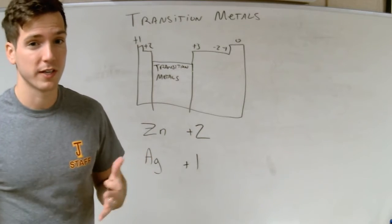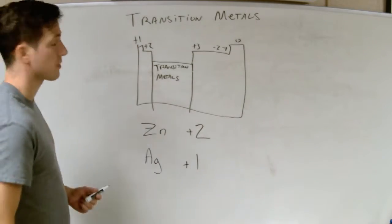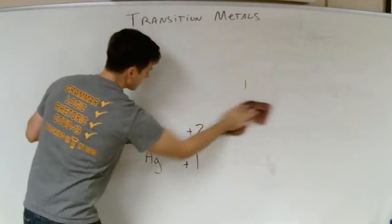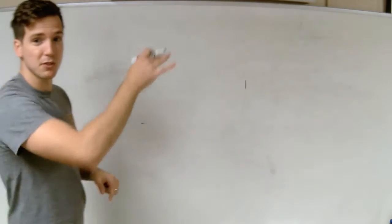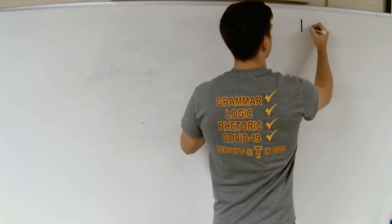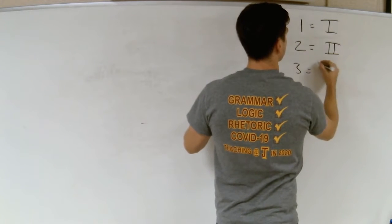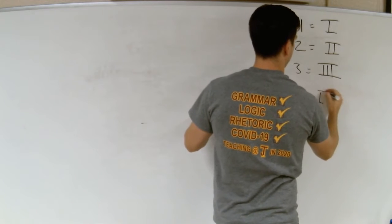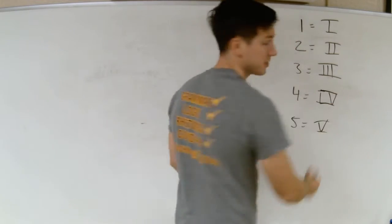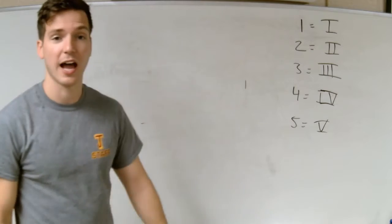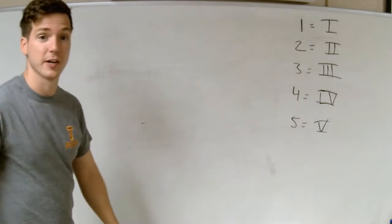Let's talk about transition metals and how we name and get formulas from them. One thing you have to know is Roman numerals. Here they are: 1 is I, 2 is II, 3 is III, 4 is IV, and 5 is V. That's really all you're going to run into — you won't see atoms that get a higher charge than 5. You'll see where these Roman numerals come into play in just a second.